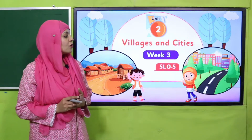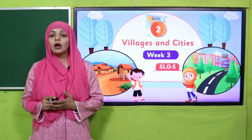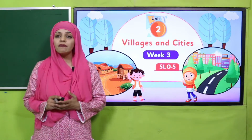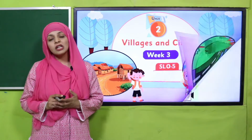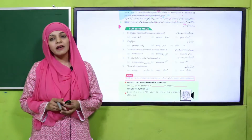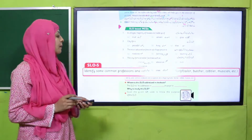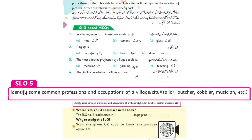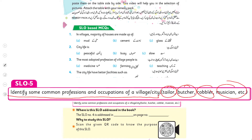The week is Week Number Three and we are on SLO Number Five. According to SLO Number Five, students will be able to identify some common professions and occupations of a village, like tailor, butcher, cobbler, musician, and so on.